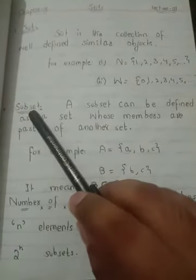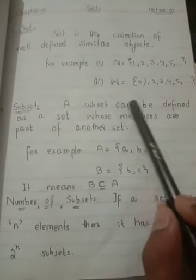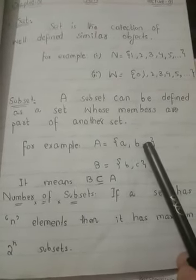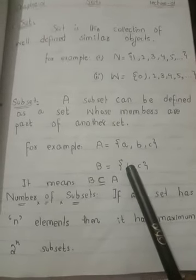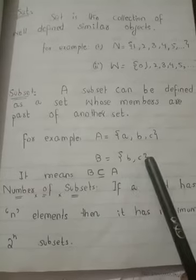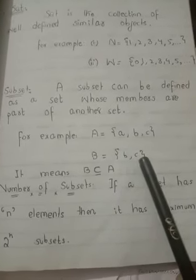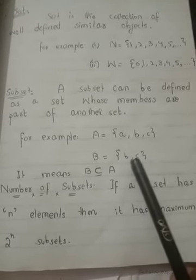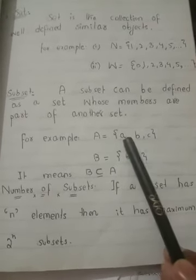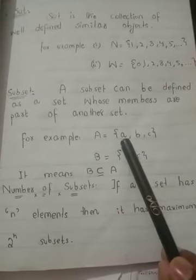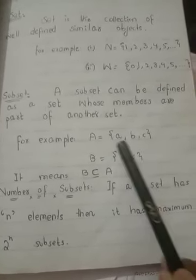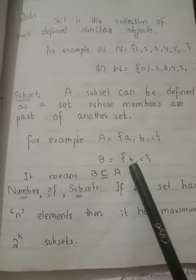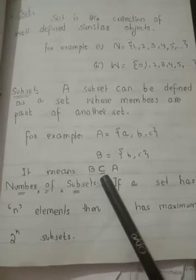Now coming to another concept that is subset. A subset can be defined as a set whose members are a part of another set. For example A = {a, b, c} and B = {b, c}. See here B elements are b, c. If you notice here these elements b, c are already present in A but there is one element that is not present in B set that is a. So we can say B is the part of A, so B is subset of A. We use this symbol to show subset.